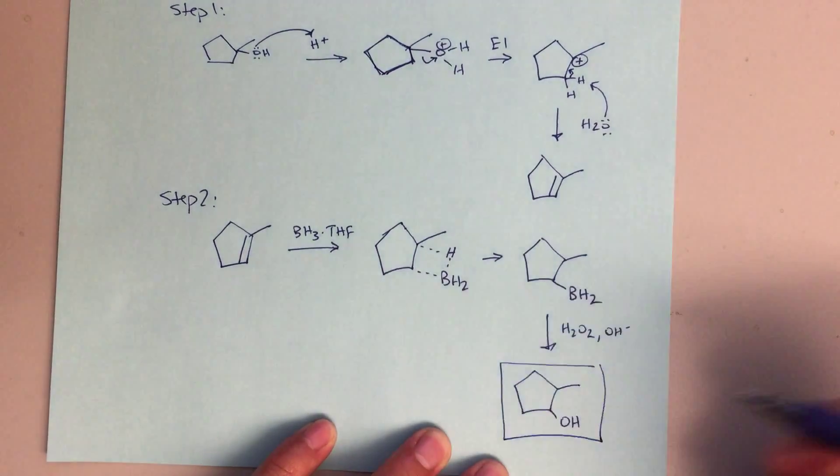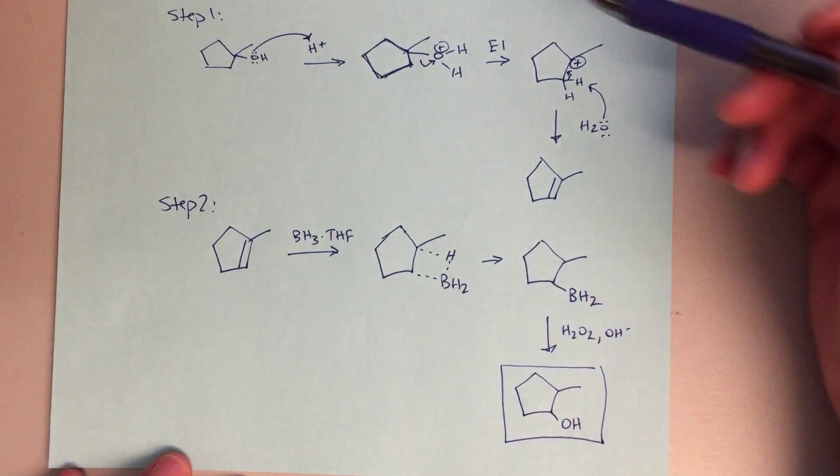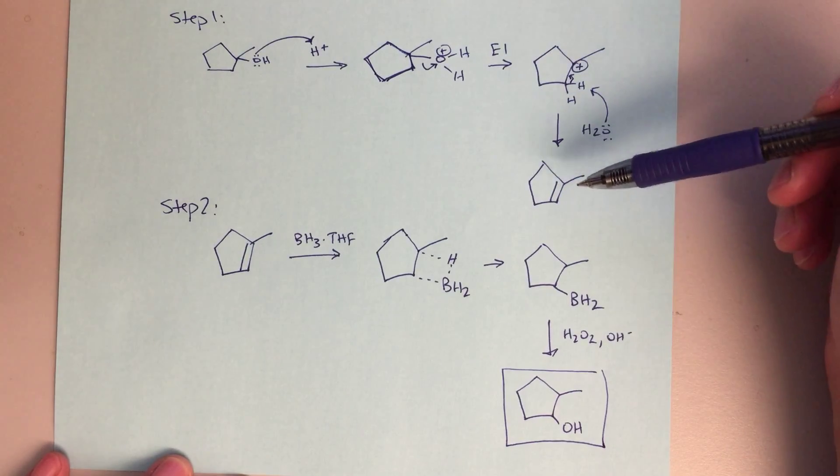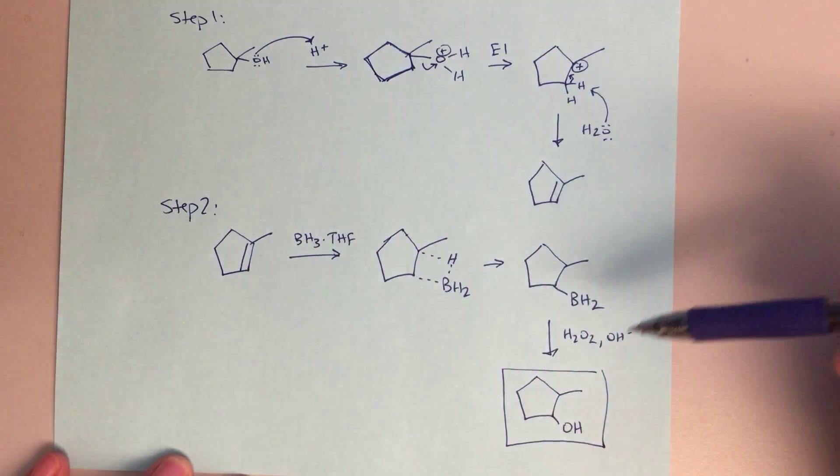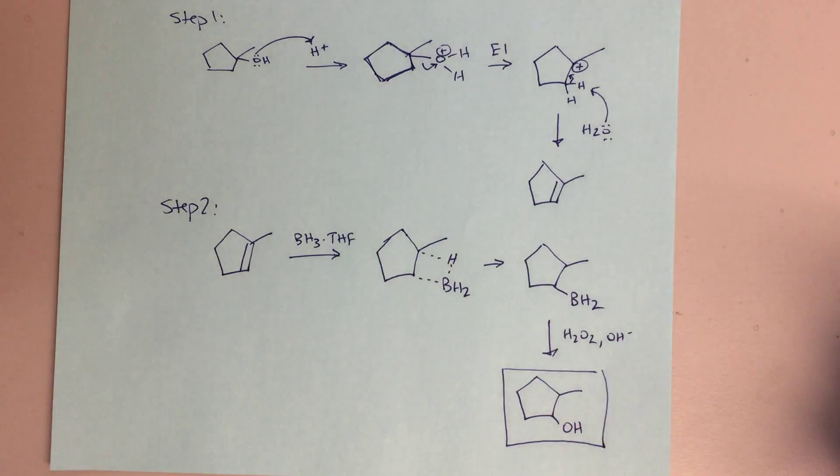And so here is our final desired product. It's a two-step process: dehydration to get rid of the water to form the alkene, and then a hydroboration oxidation to form our final product. All right, have a good weekend.